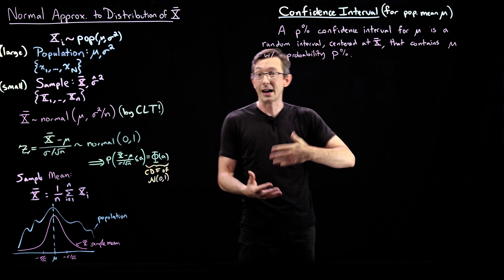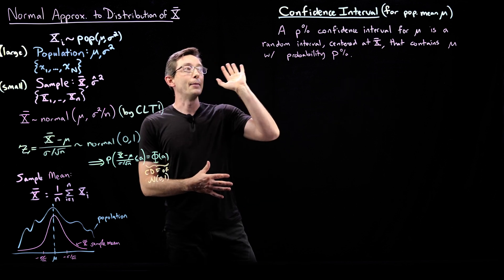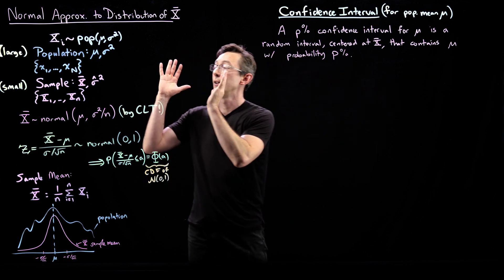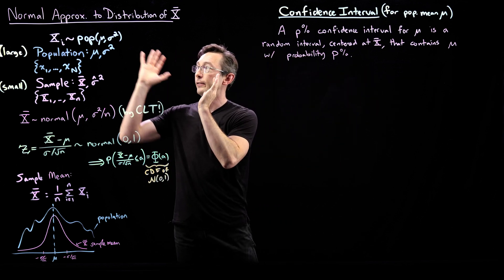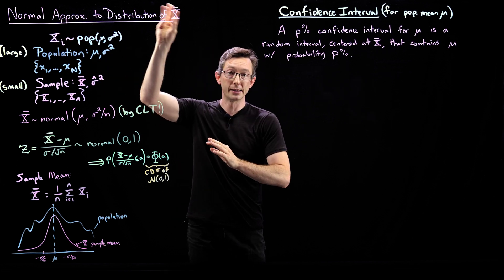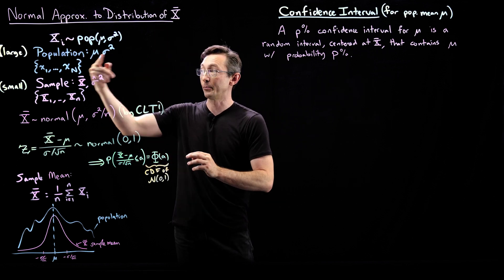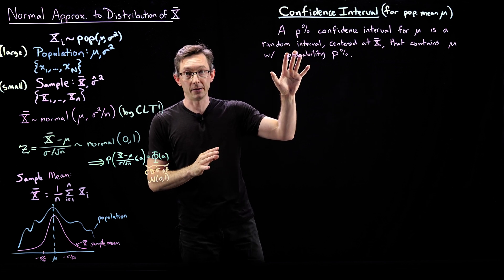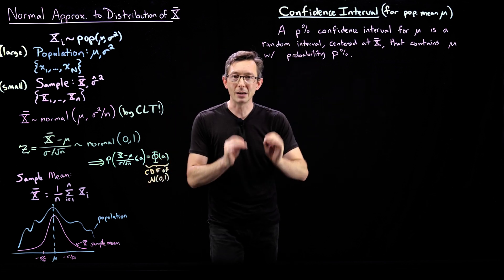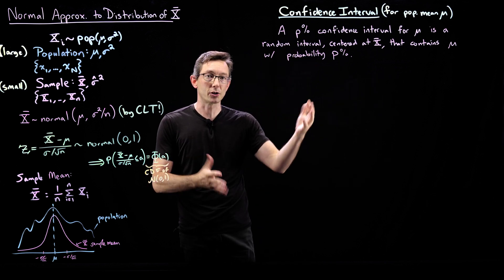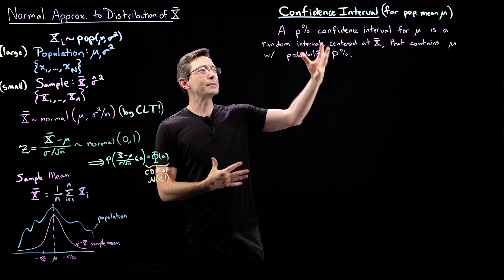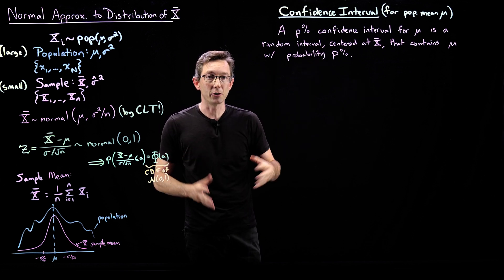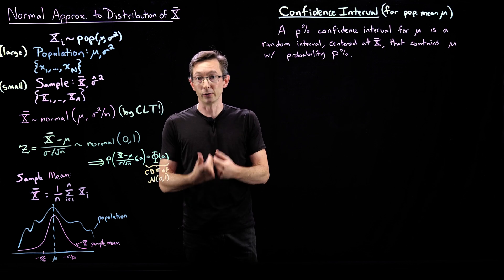This is very closely related to hypothesis testing, and this is a super important idea. I want to introduce it here in the context of the normal approximation to the sample mean x-bar and how it approximates the population mean mu. But this is a much more general concept. I'm going to state what it means in words, then draw a picture, then show how to use it. This might not seem 100% intuitive at first, but it's going to get really intuitive really quickly.